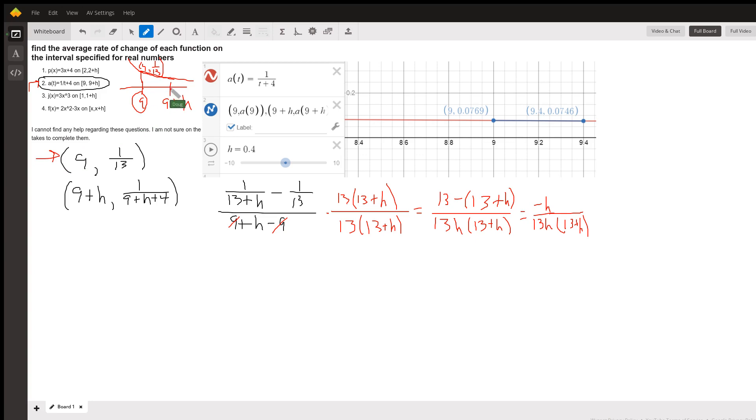This point has an x-coordinate of 9 plus h. So if I put 9 plus h into this function definition for t, I get 1 over... the x-coordinate is still 9 plus h. And the y-coordinate is this guy right here, 1 over (9 plus h plus 4), or 1 over (13 plus h).